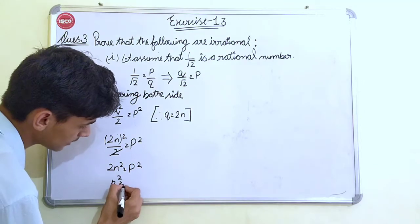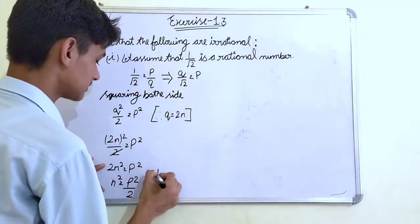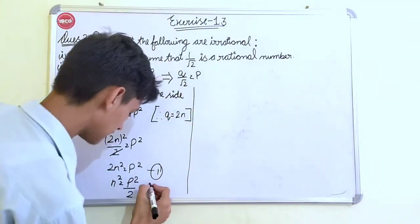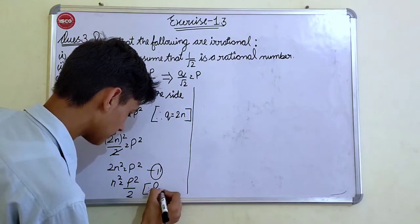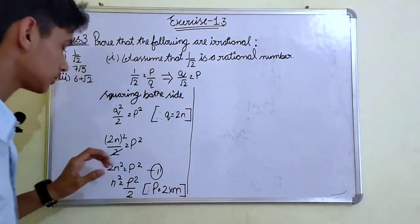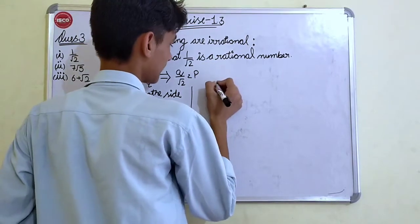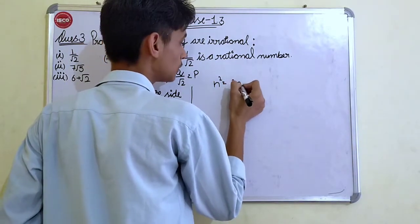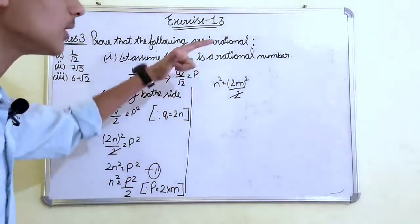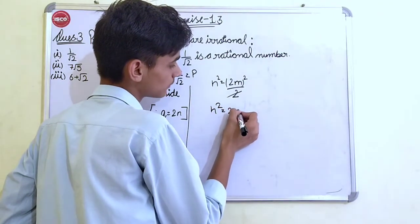N square is equal to P square by 2. It's the first equation. Therefore, P is equal to 2 into M. N square is equal to 2M whole square by 2. Then this 2 is get cancelled with the square. We get N square is equal to 2M square.